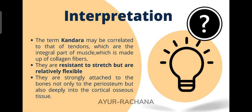These tendons are strongly attached to the bones — not only to the periosteum, which is the outer covering of the bone, but they are deeply inserted into the cortical osseous tissue, meaning the inner tissue of the bone as well. So Kandaras are the tendons that connect different muscles to the bones.